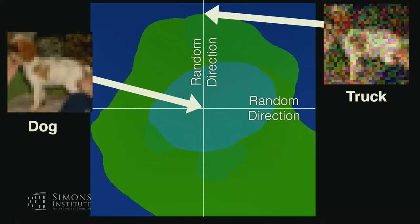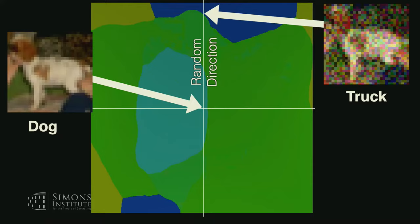The phenomenon of adversarial examples says that while in most cases, if you pick two random directions, you can draw a box around the center and everything nearby is labeled the same — all the light blue dog label. But if I pick the worst-case direction — an adversarial direction — now you can have an image that looks essentially the same but is classified as 'airplane' within that same small box.